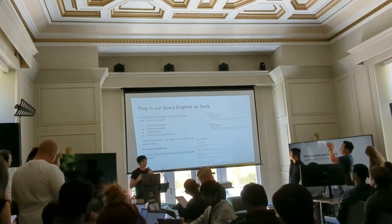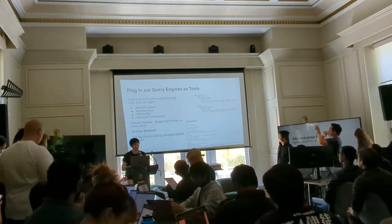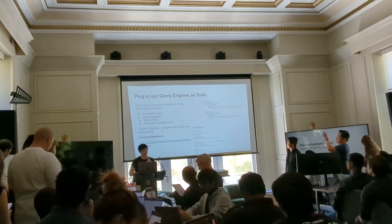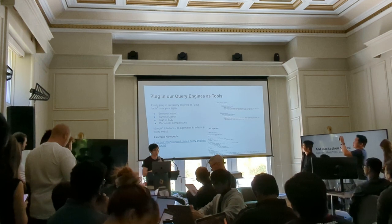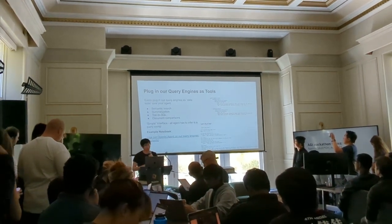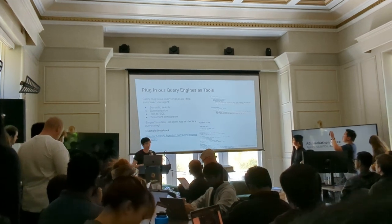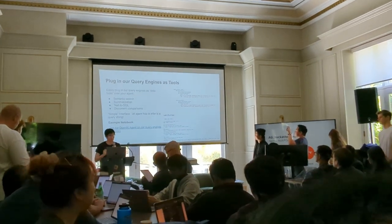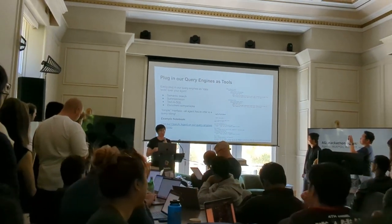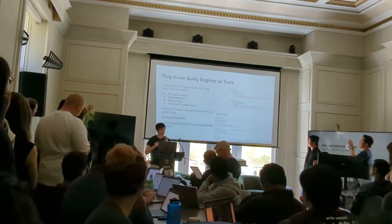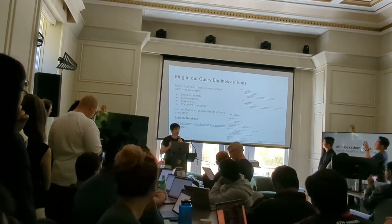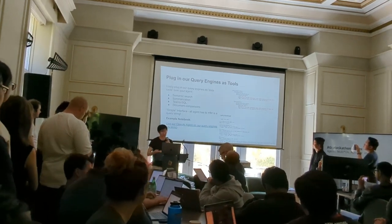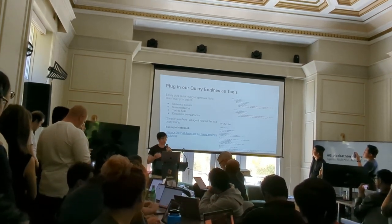The next step is: how do we plug data tools into this agent loop so that it can perform different types of data tasks? If you have a tool that does semantic search or retrieval-augmented generation, another tool that does summarization of your data, another that does text-to-SQL or structured analytics, or another that does document processing — the tool interface is very simple: you just pass in a string. The API interface is simple for the agent to access; all it has to specify is a string for the agent to execute the tool, and then the tool can go and actually do things with the data.